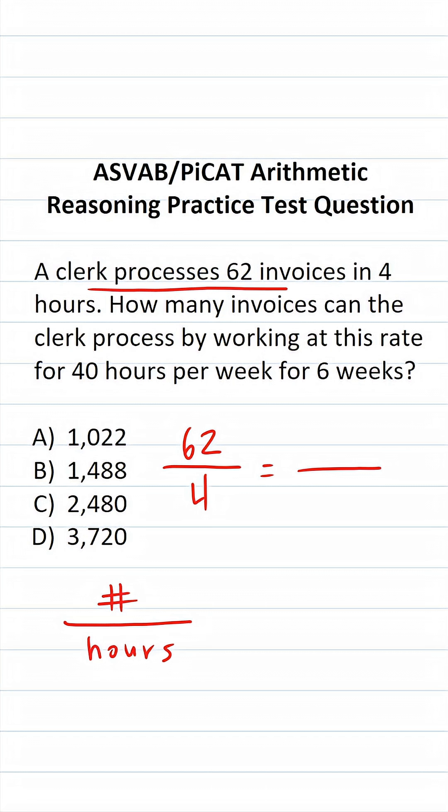So as we fill in this right-hand side of the proportion, we want to make it look like this: the number of invoices over the number of hours. Well, in this case, we want to know how many invoices. So that's unknown. We can call that X. So let's put that up here. Again, this is the number of invoices over the number of hours.